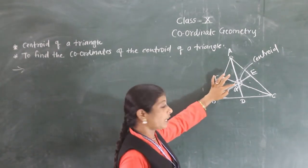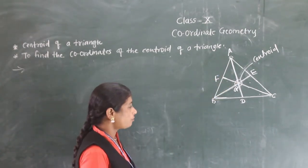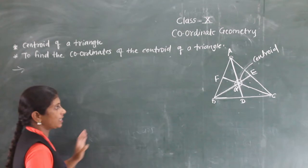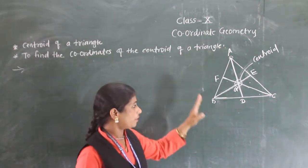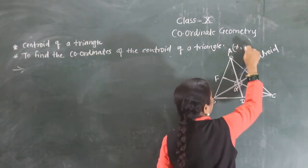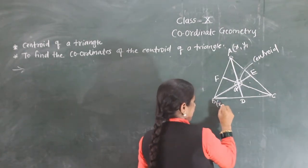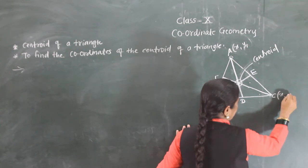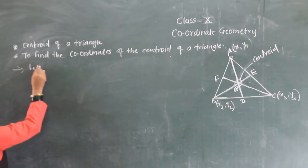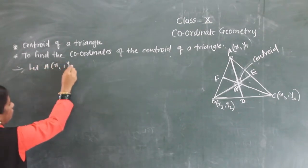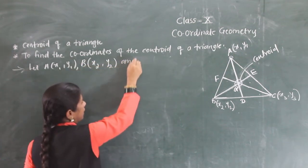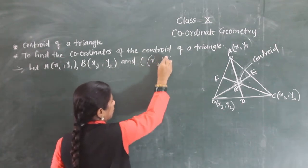Now we have to find what are the coordinates of the centroid. For this purpose, we take the vertices A(x1, y1), B(x2, y2), and C(x3, y3) as the vertices of the triangle.